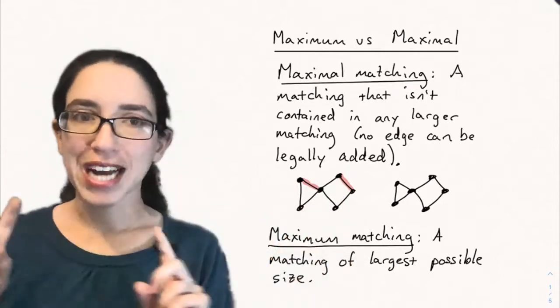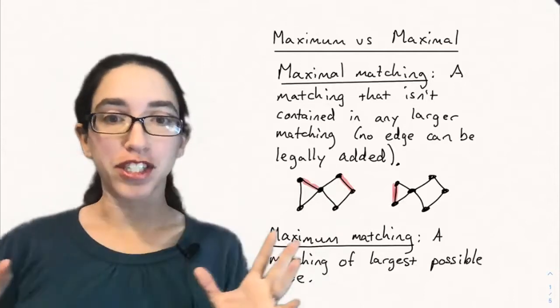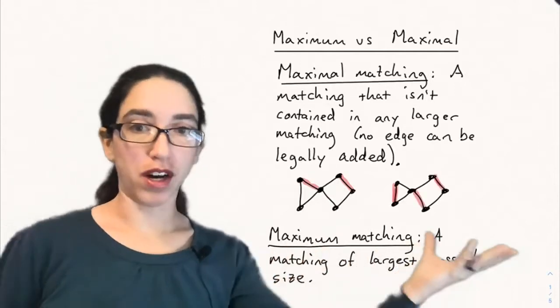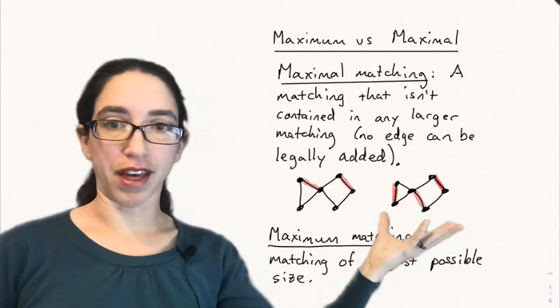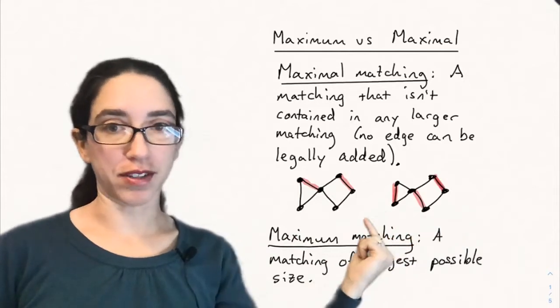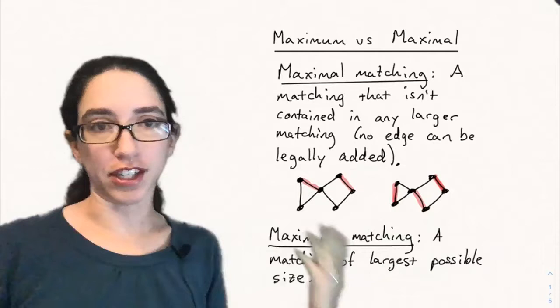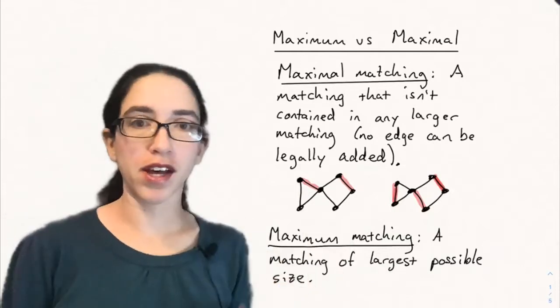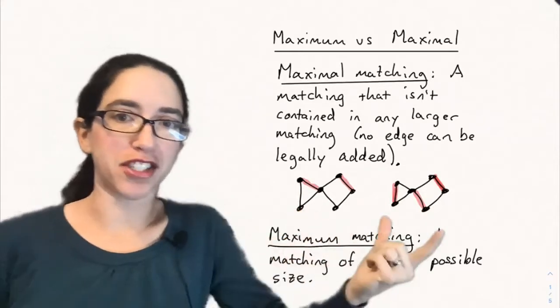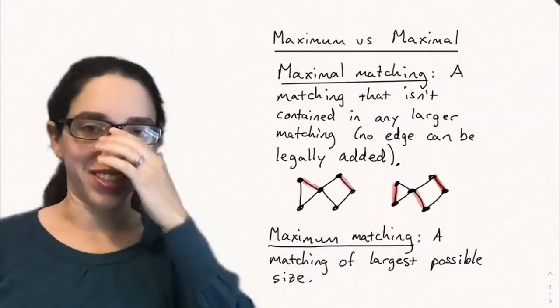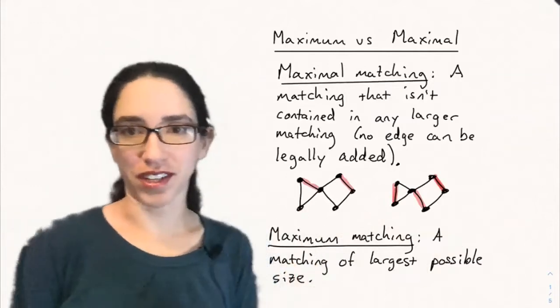But it's not maximum. Maximum means that it's the largest possible size. And we saw on the previous page that we have a matching of size three. If you take these three edges, they share no common vertices, so that is a matching. So here's a maximal matching that's not maximum. It's a slightly different notion in each case.